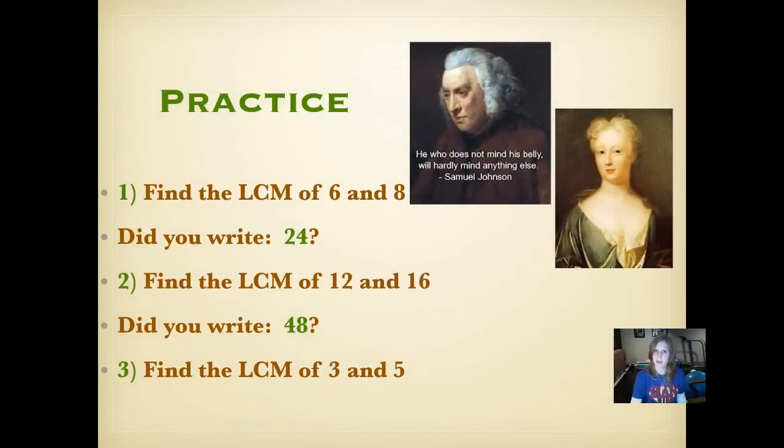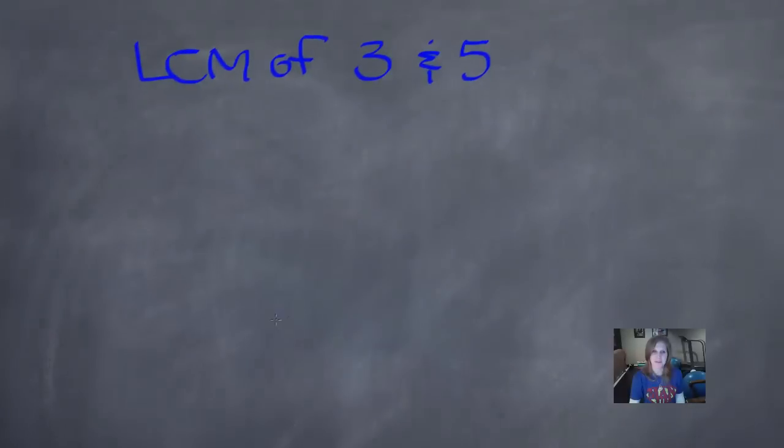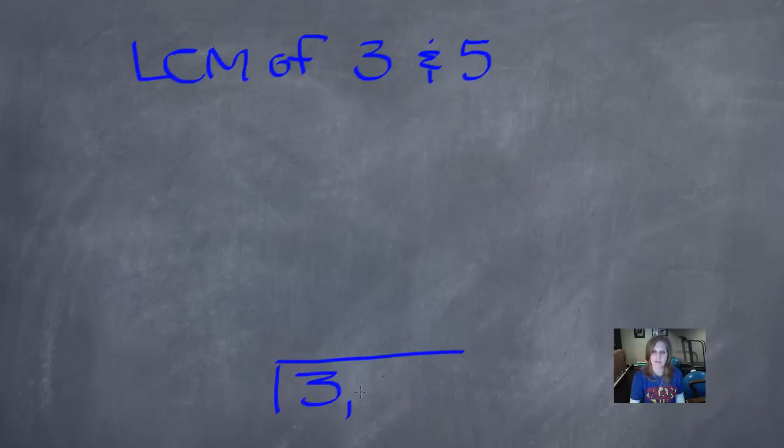Number 3, find the LCM of 3 and 5. Pause it and push play when you're ready. Did you write 15? Let's see how we did that. So we will put our 3 and our 5 in the bottom layer of our cake. What number will divide evenly into both 3 and 5? This isn't a trick question. You're right. There's only one number, and it's 1. 1 goes into 3 three times. 1 goes into 5 five times.